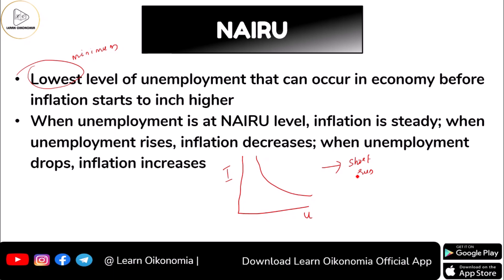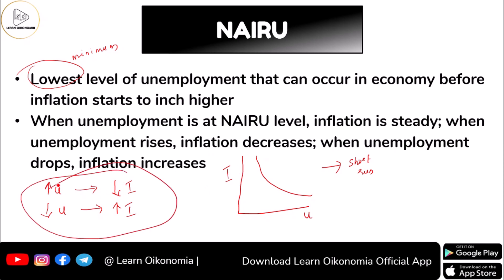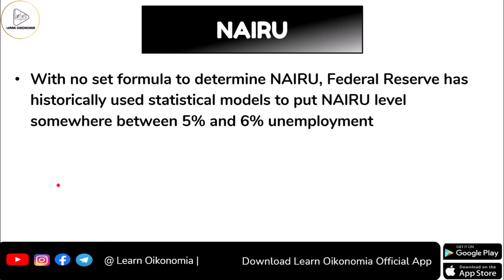Coming back to the explanation, when it comes to the short-run Phillips curve, we can have a trade-off between inflation and unemployment. When unemployment is at the NAIRU level — that is, at its lowest minimum level — inflation would be steady. In the short run, whenever unemployment rises in the economy, this leads to a fall in inflation, and whenever unemployment falls, this leads to an increase in inflation. This trade-off can happen only in the short run.